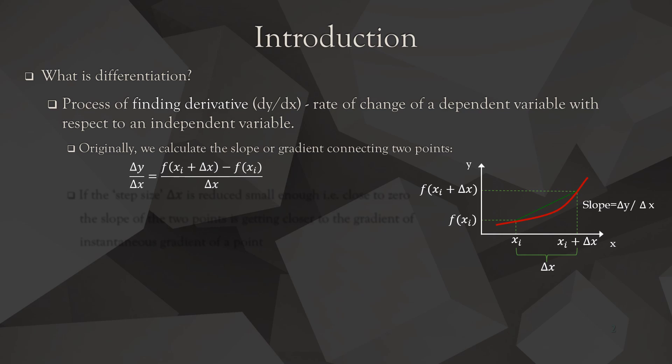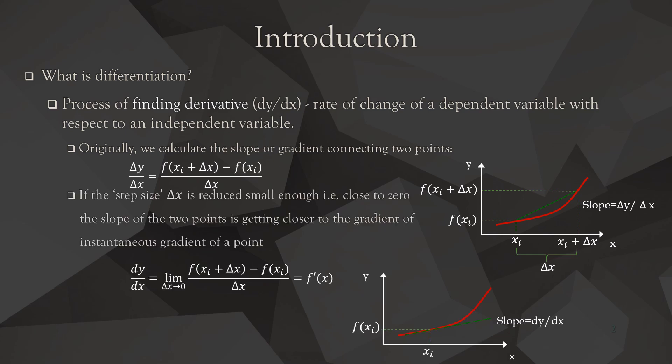We can calculate the slope of a straight line connecting these two points using the formula with the delta y and delta x symbols. The gradient of this straight line connecting the two points is the first thing we can do. If we reduce the size of delta x small enough, close to zero, the two points get closer to each other, and we are essentially calculating the instantaneous gradient of a single point. When delta x is reduced close to zero, the slope approaches the instantaneous gradient at a point.